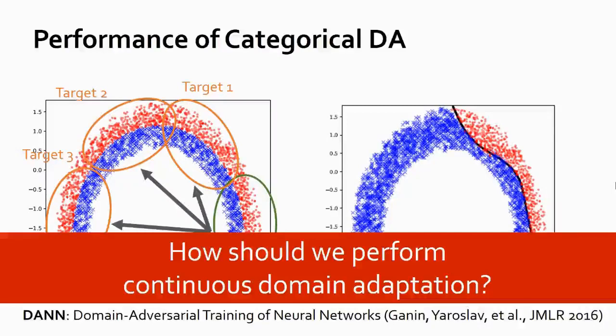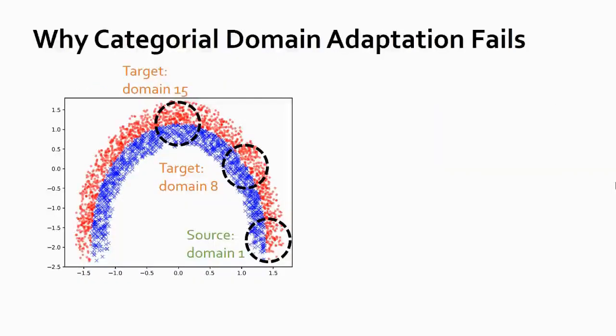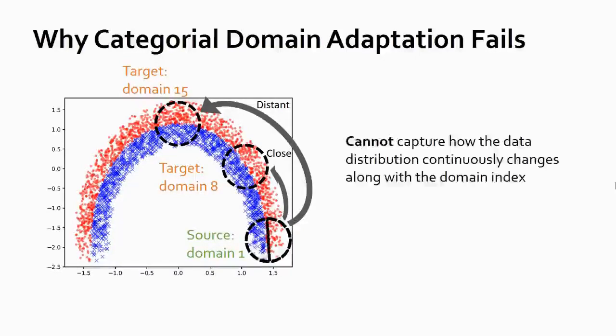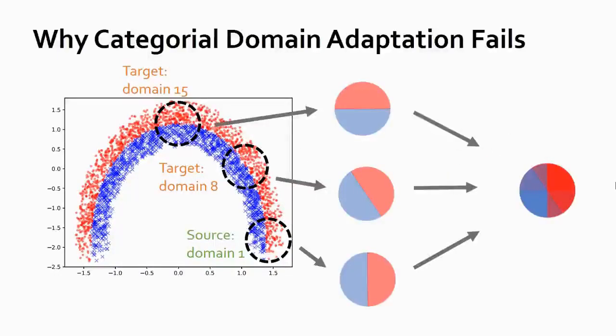So how should we perform continuous domain adaptation? We note that categorical domain adaptation fails because they cannot measure the distance between domain indexes. It has no idea that domain 1 and 8 are closer, but domain 1 and 15 are more distant. Therefore, it cannot capture how the data distribution continuously changes along with the domain index. As a result, when adapting from domain 1 to domain 8 and 15, categorical domain adaptation simply transforms the data into a common space, leading to poor performance.